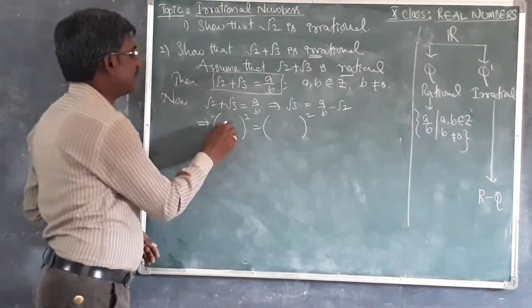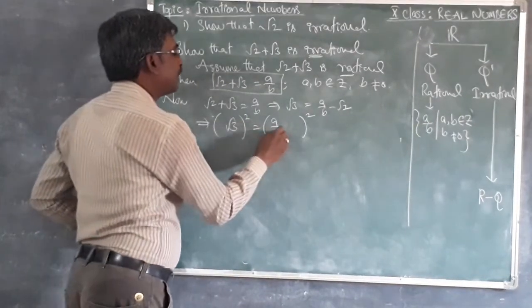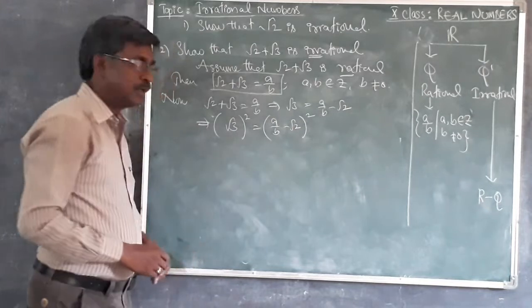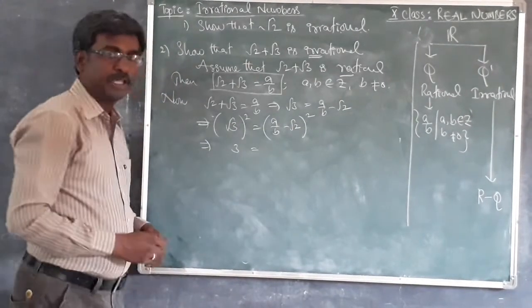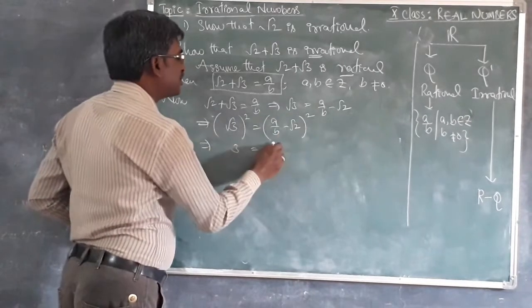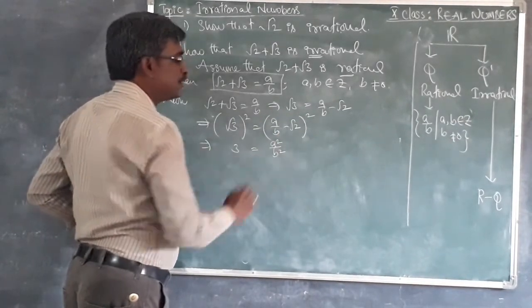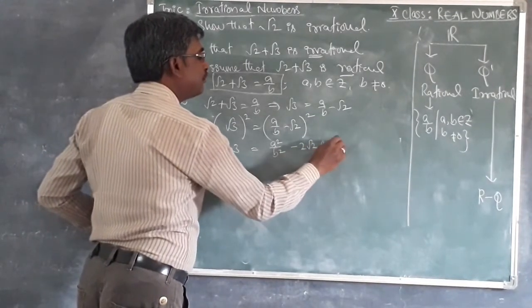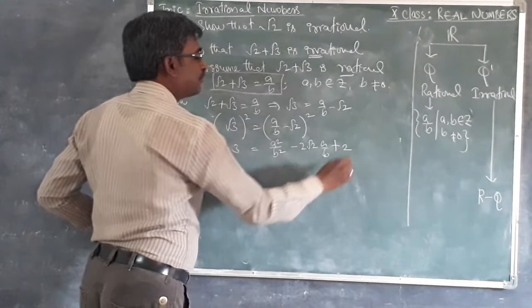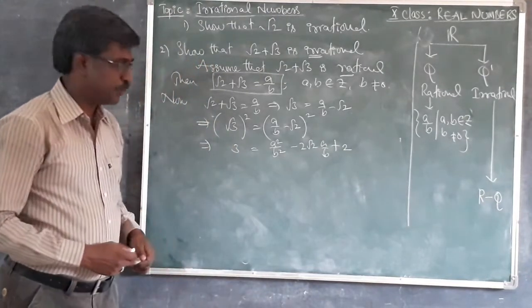Then here root 3, and here A by B minus root 2. Now this side is 3, and is equal to using A minus B whole square: this is A square minus 2AB plus B square. B square is 2.